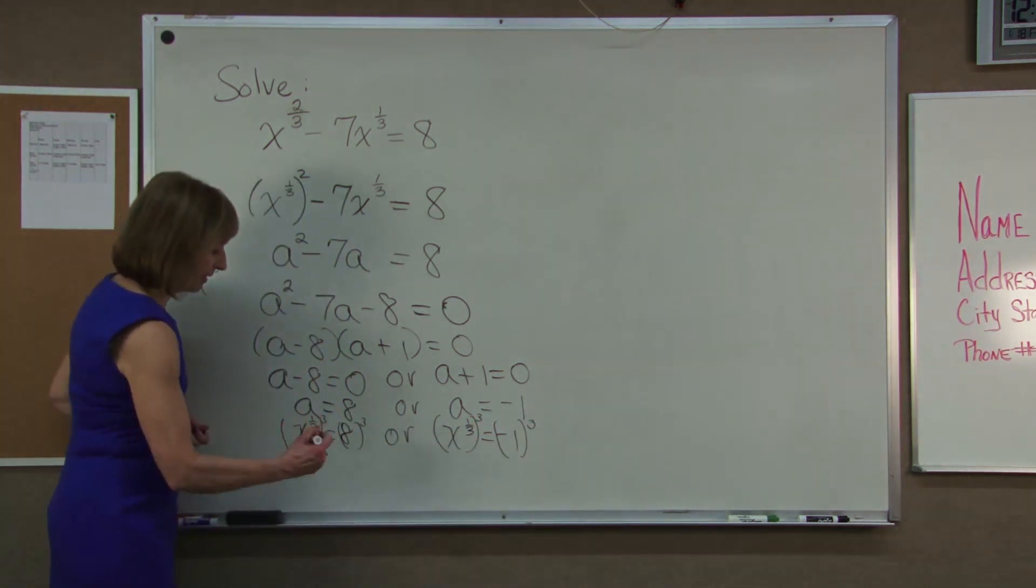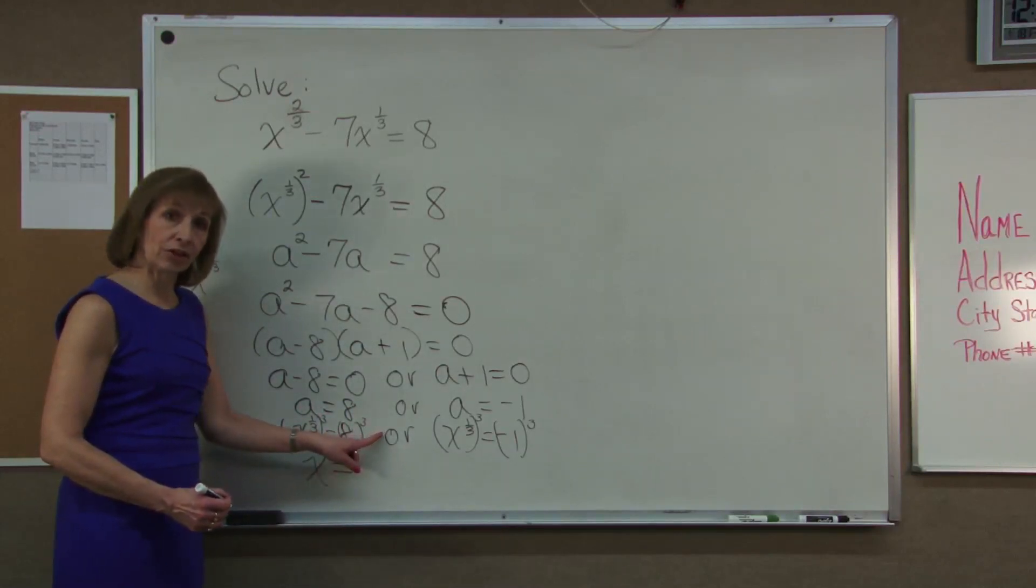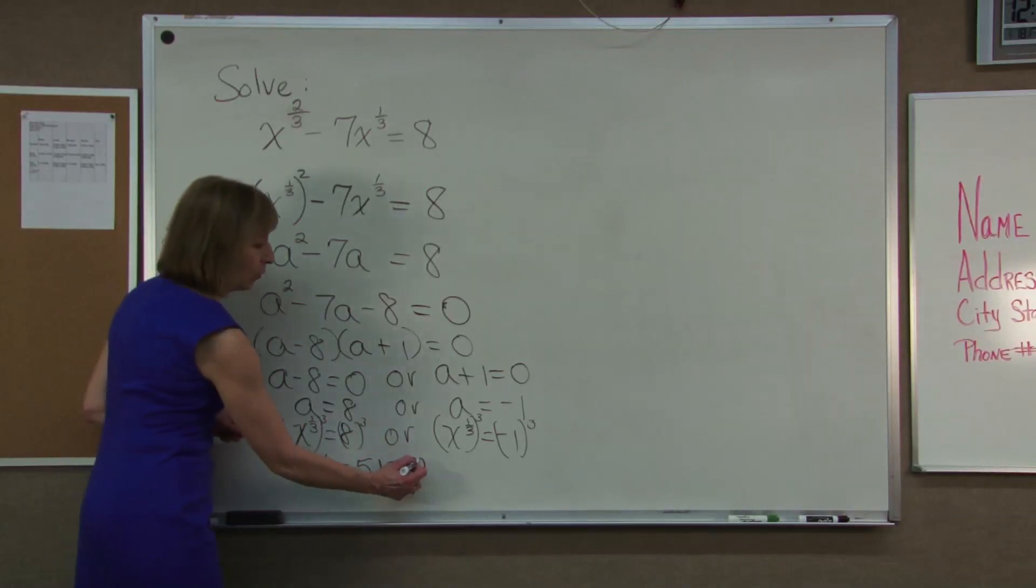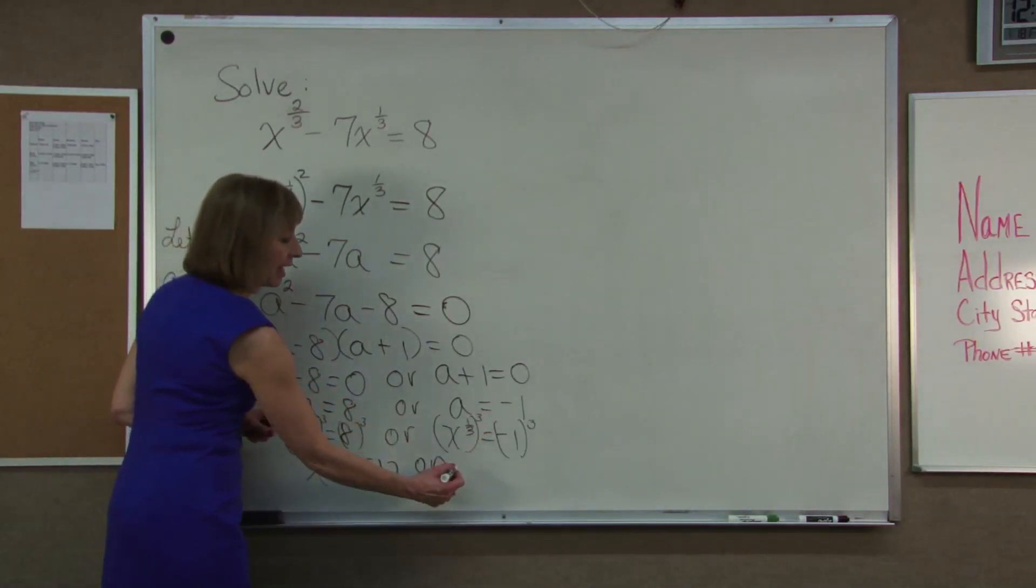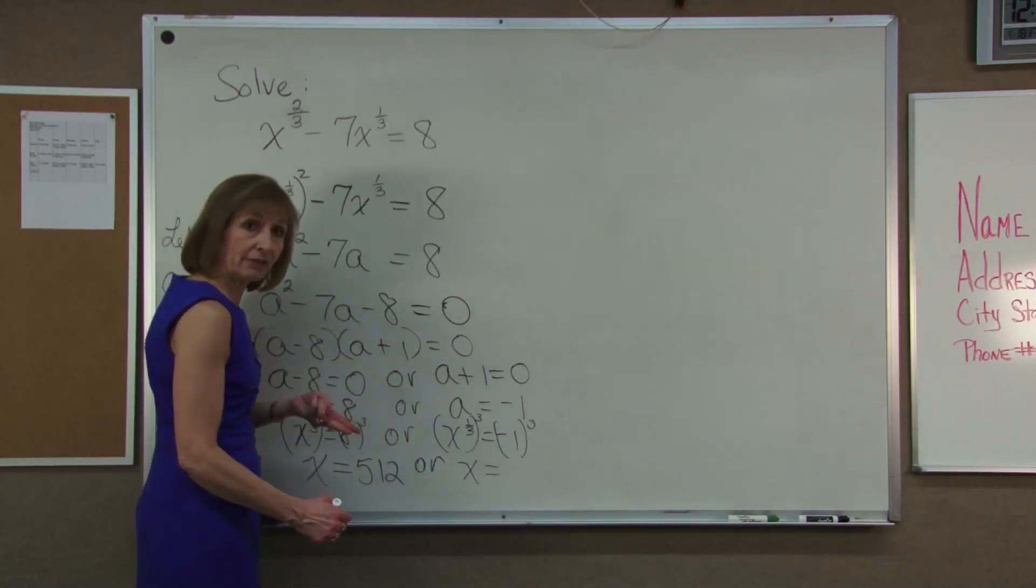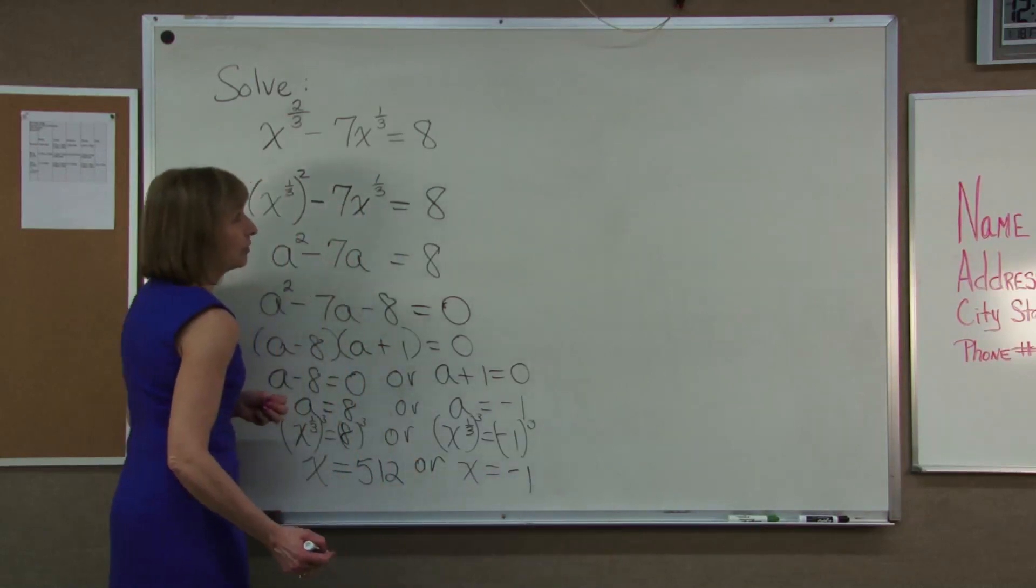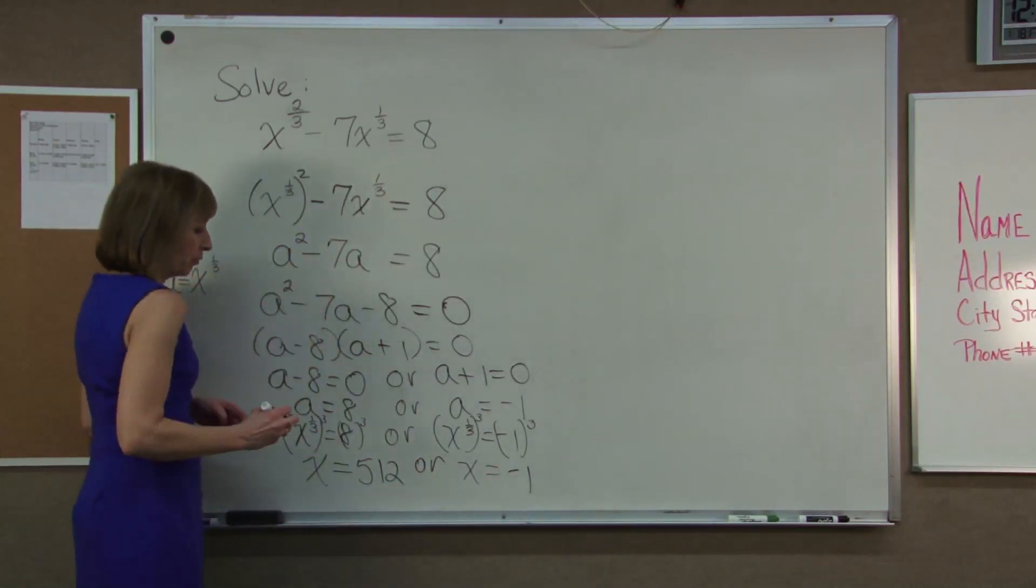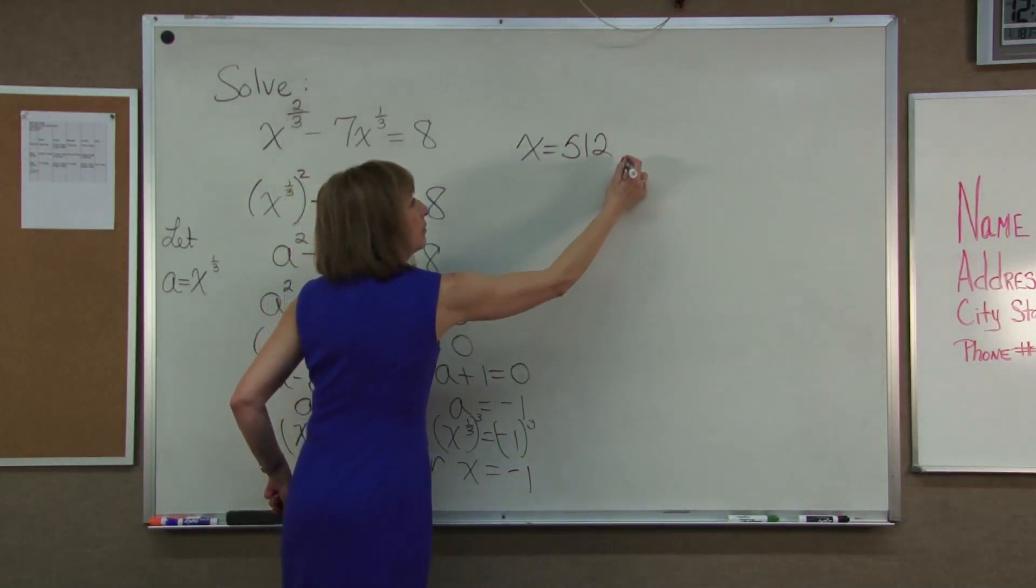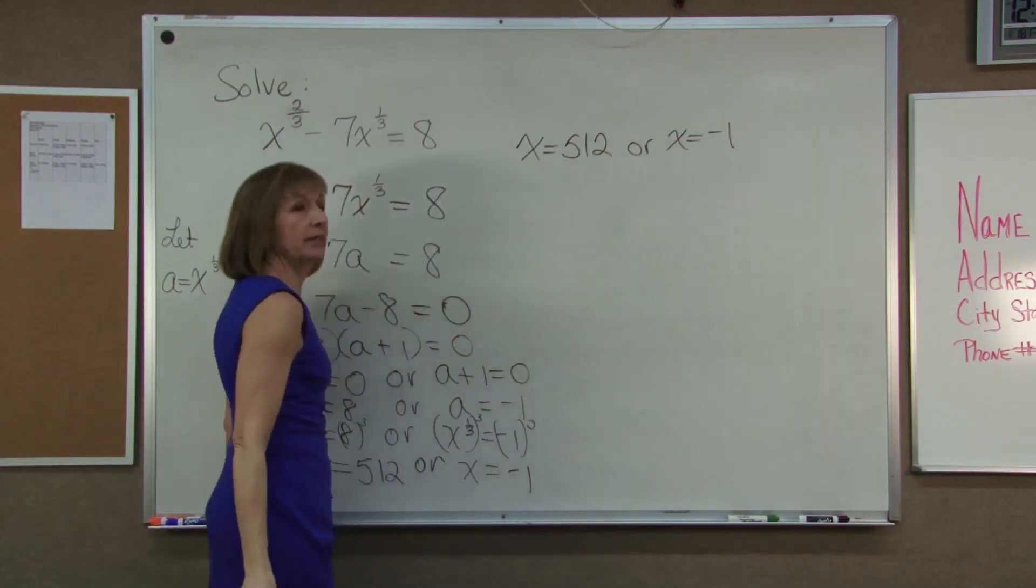We get x is equal to, well, 8 to the third power is 512. Or, on this other solution we get x is equal to, well, negative 1 times negative 1 is 1 times negative 1 is negative 1. So our solutions to the original problem is x is equal to 512 or x is equal to negative 1.